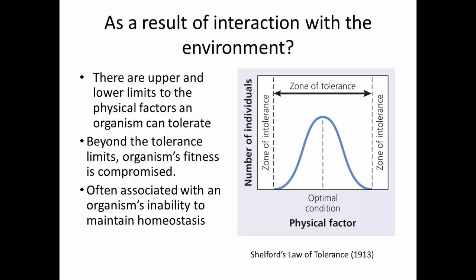Look at the graph for a moment. We see on the x-axis some physical factor — could be temperature, moisture, whatever. On the y-axis, the number of individuals that survive at that particular state of that physical factor. You'll find there's an optimal condition, an optimal temperature, in the middle where most organisms are optimally adapted to survive. If you move in either direction away from that optimal condition, the tolerance is still there — they can still tolerate the habitat — but it becomes increasingly more difficult.